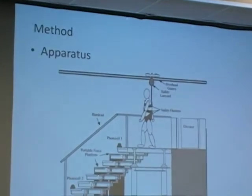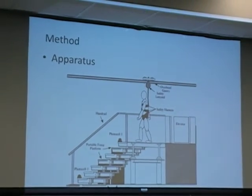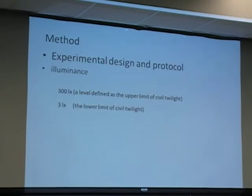Here are the stairs. You can see there are two force platforms on the second and fourth stair, and at the first and end step, there are two photocells to monitor the speed and some safety harness to prevent injury. There are two levels of illuminance. The first illuminance is 300 lux, which is the upper limit of twilight. Another is 1500 lux. Speed was controlled from 0.61 to 0.69 meters per second to prevent the influence of extreme speed.